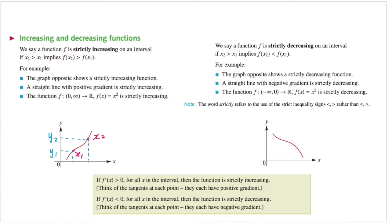If a function is strictly decreasing, we still take two points x1 and x2 where x2 is a greater value than x1. However, the corresponding y values have y1 greater than y2. So we say that this function is strictly decreasing — like going downhill, sliding down.